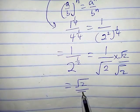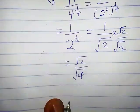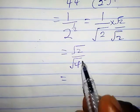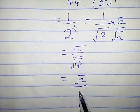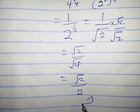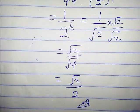So this equals square root of 2 over, what is square root of 4? That is 2. So this is the required solution. That's it, thanks for watching.